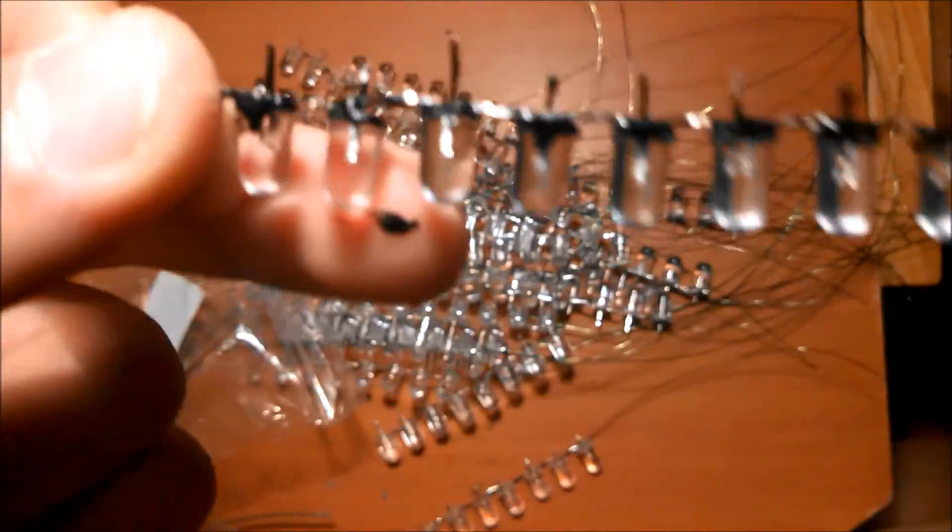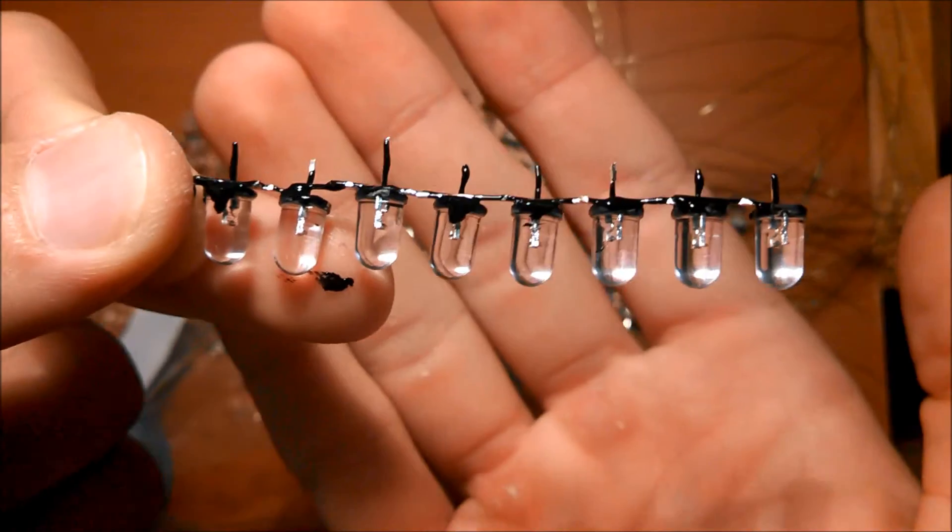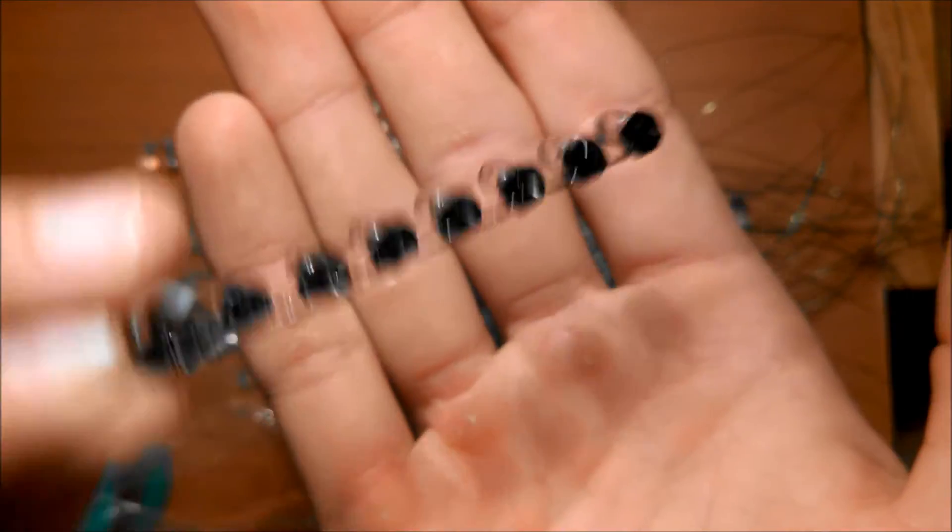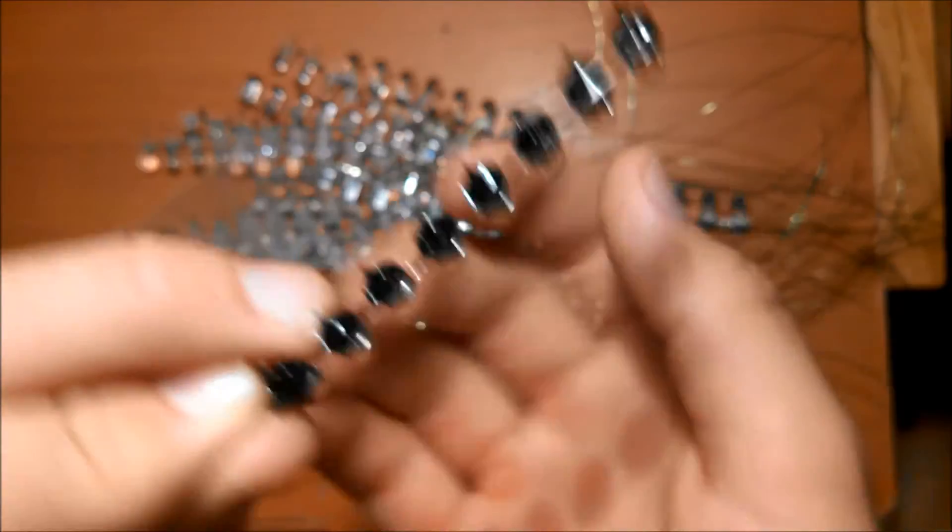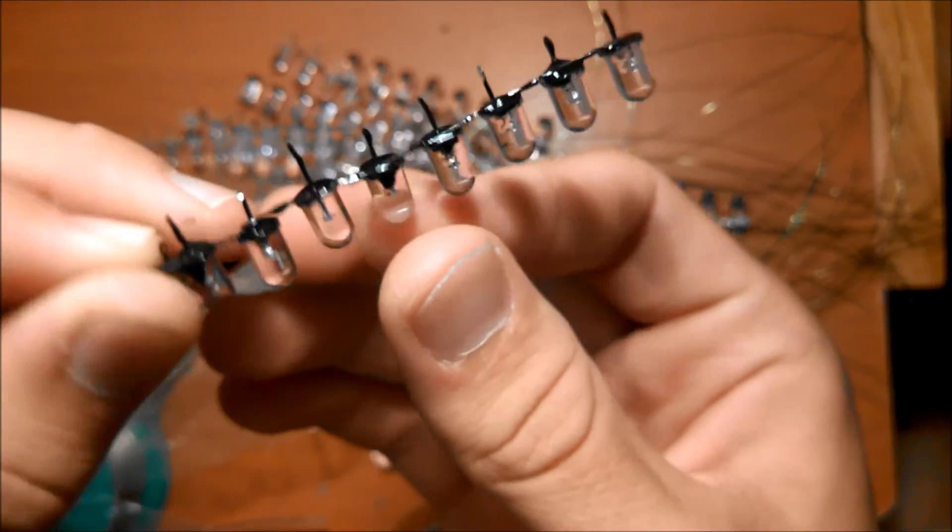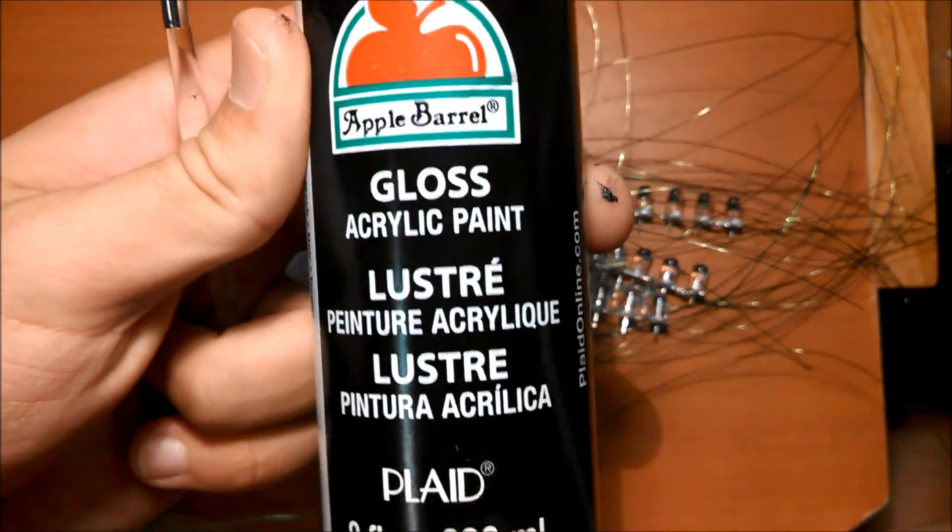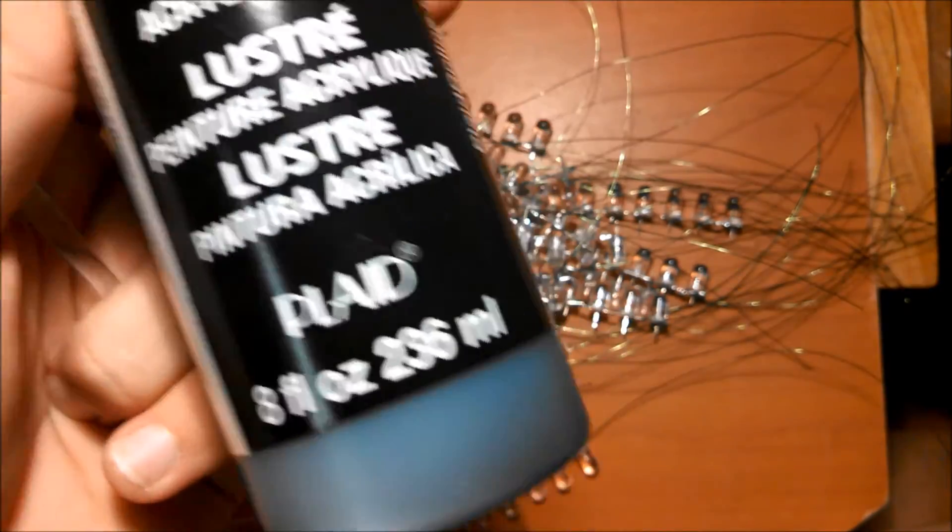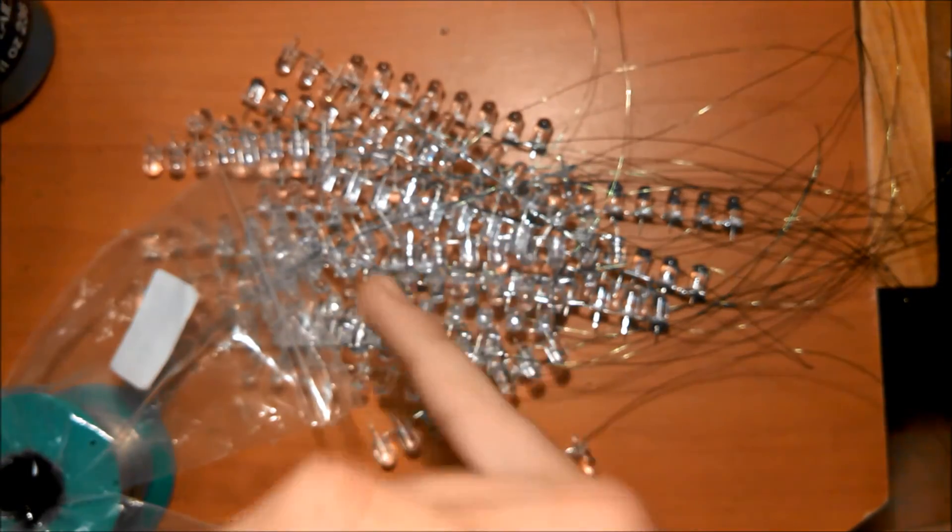Don't worry about getting the paint wherever, because this acrylic paint washes off with rubbing alcohol. So don't worry if you get it on the LEDs or anywhere else on the rows here. By the way, this stuff is available at most craft stores. I bought this at Walmart, I'm pretty sure other stores carry it. We'll paint the rest of these LEDs.